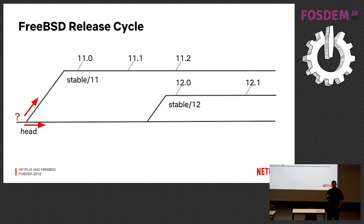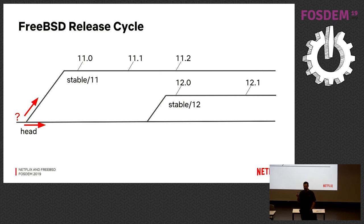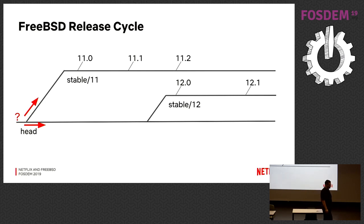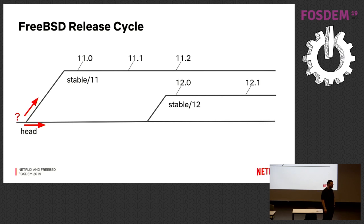When I first joined Netflix, we were running stable 10. When stable 11 was released, we had a choice: stay on stable 10 and get further behind, or switch to stable 11 or head. We decided to rebase onto head — the development branch — and track that. We did that for about two years. Then when stable 12 came along, there was essentially no discussion or debate: everyone loved tracking head so much that we've continued to do that. It's worked really well for us.